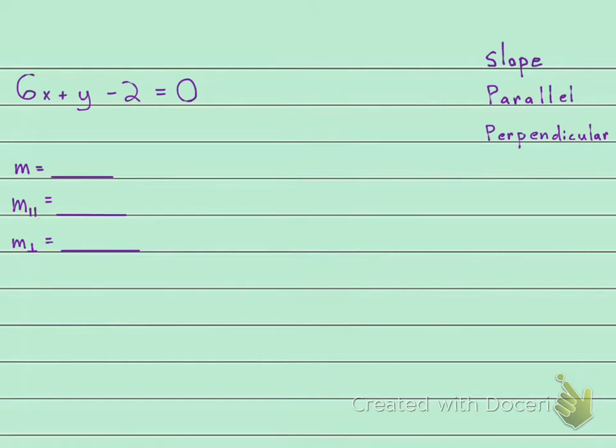So in order to find the slope of a linear equation, probably the best way to do it is to get it in this format. This is slope-intercept form, and the m, which is the coefficient in front of the x, is just going to tell me the slope. I could just look at it, I'll know exactly what the slope is.